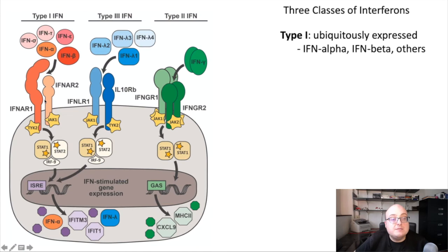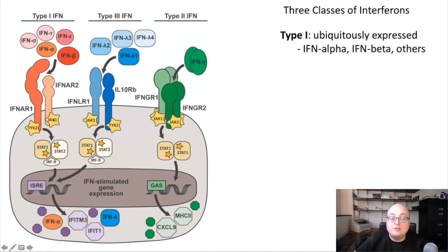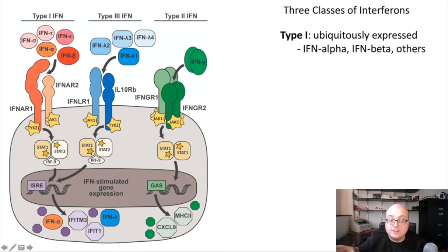Type 1 interferon cytokines bind to the type 1 interferon receptor, or IFNAR — interferon alpha receptor. Notice that it is a dimeric receptor with a 1 and a 2 subchain, and it has familiar players downstream: JAK family kinases, specifically JAK1 and TYK2, and it activates STAT transcription factors. So it has that same overall motif that both class 1 and class 2 cytokine receptors have.